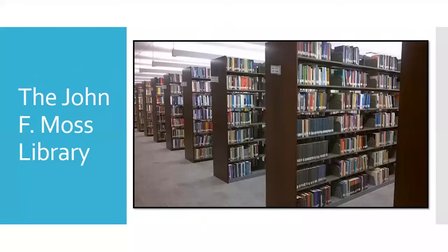The University Library is the John F. Moss Library, located in the University Center building of main campus in Texarkana. The service desk is on the third floor, just inside the library entrance, and most of our books are on the fourth floor. The library has a ton of books, but this presentation is mainly focusing on our electronic resources — ebooks, online journals, and other online resources you can use without ever stepping foot into the library.